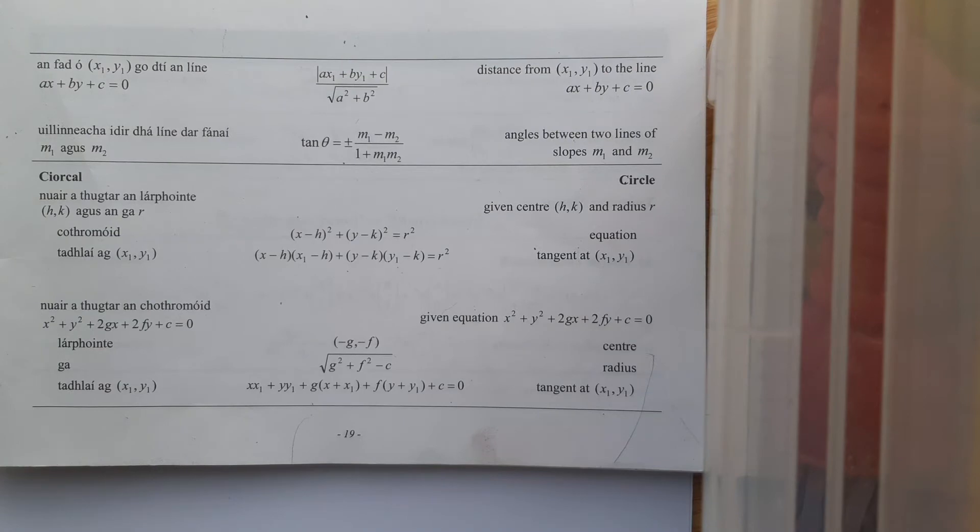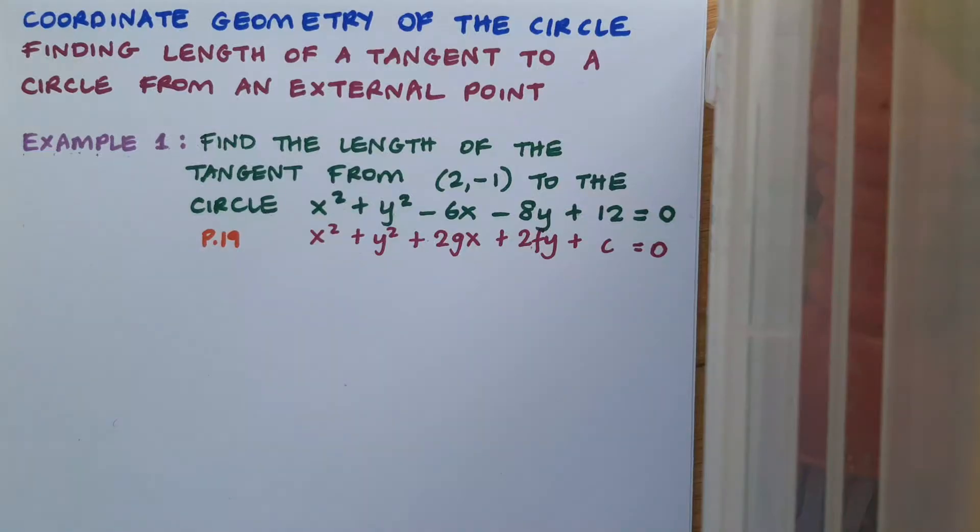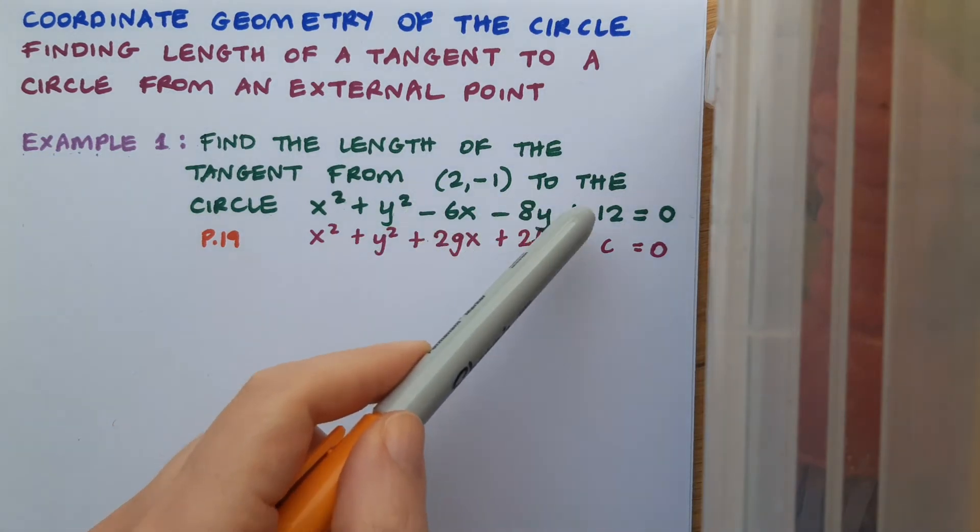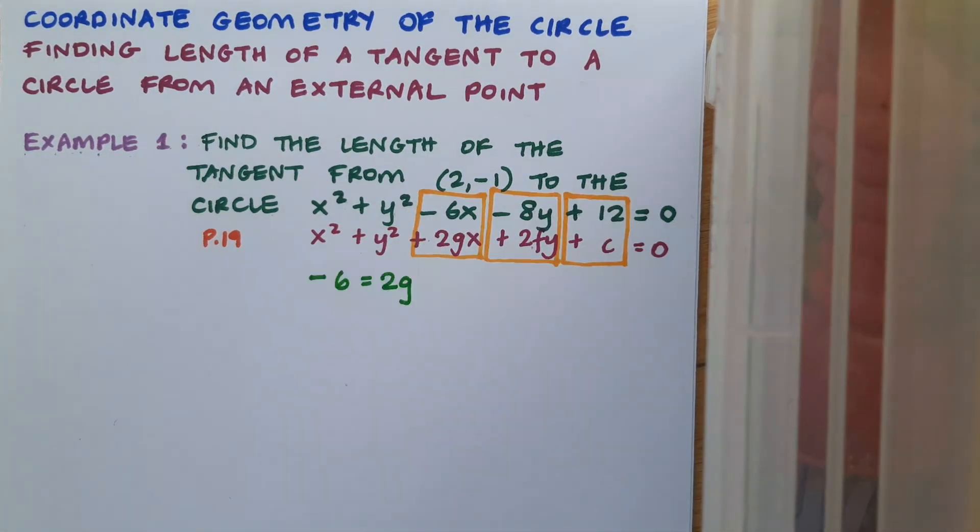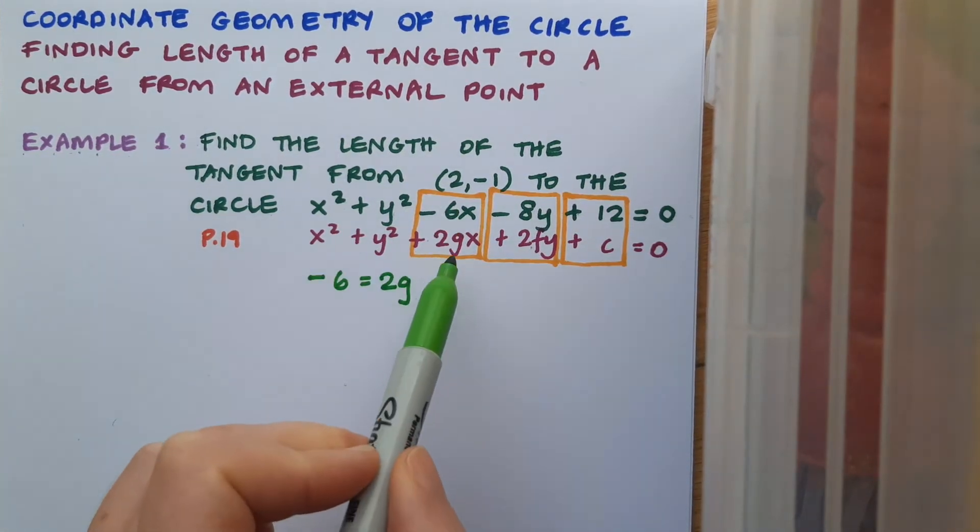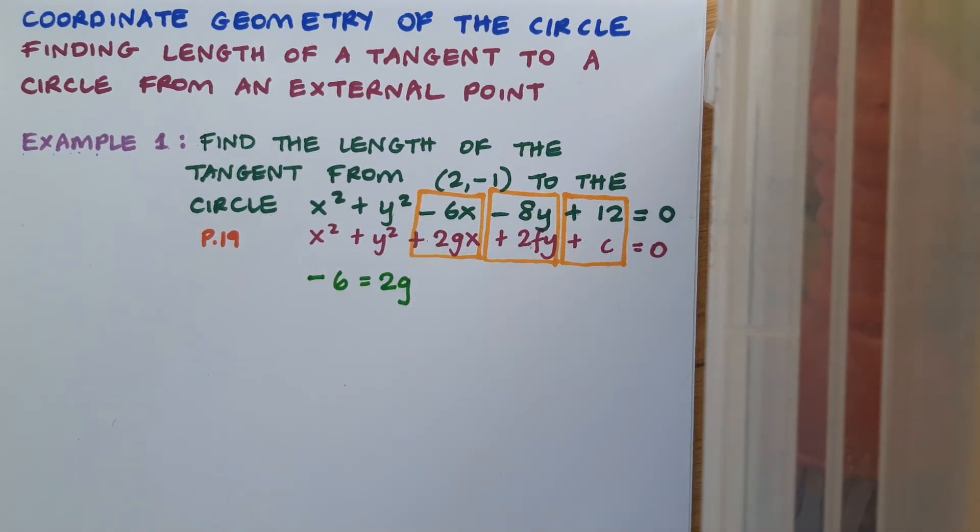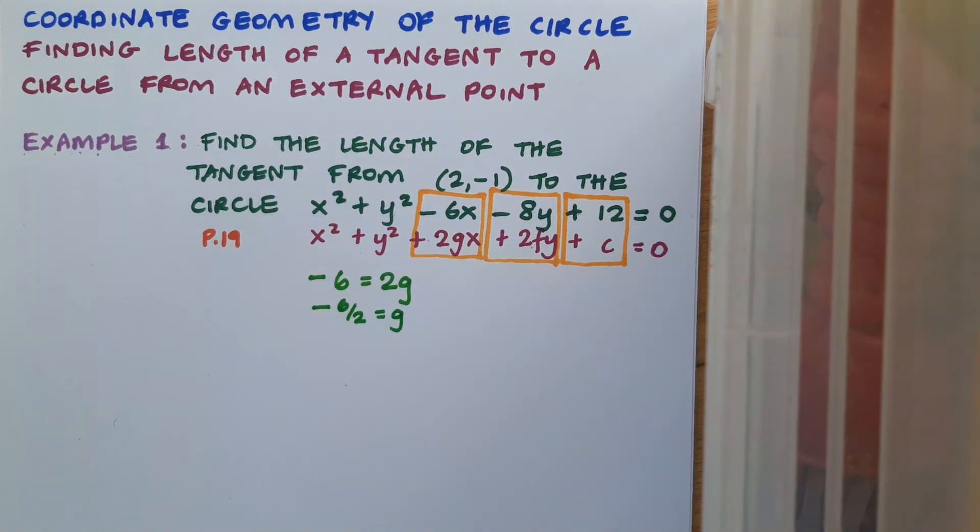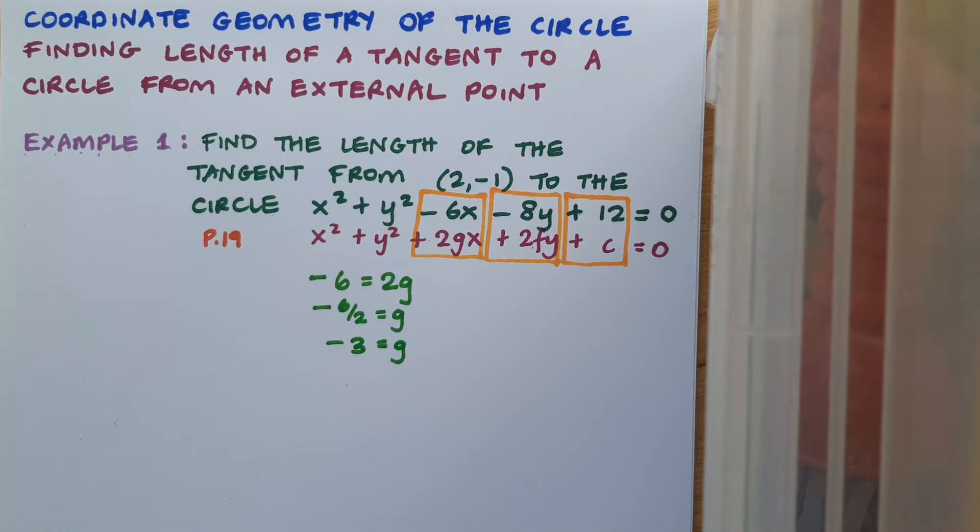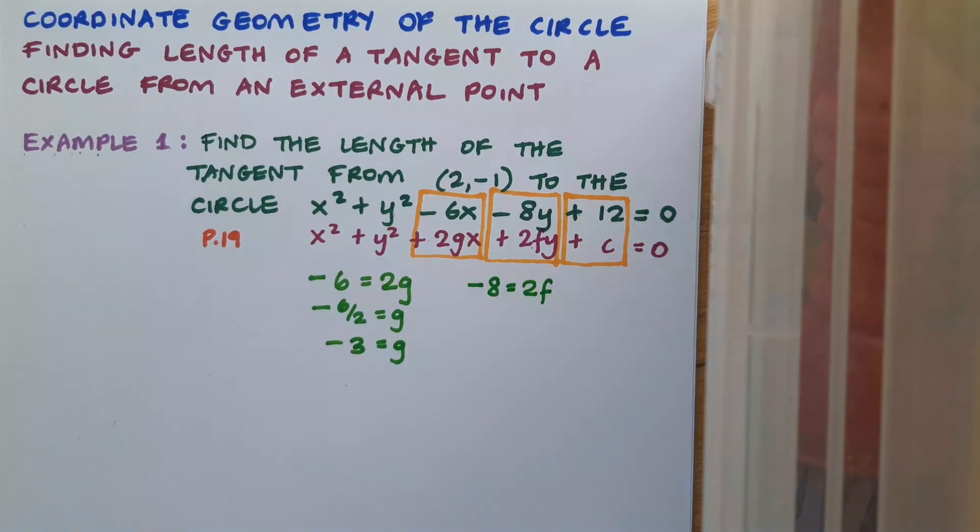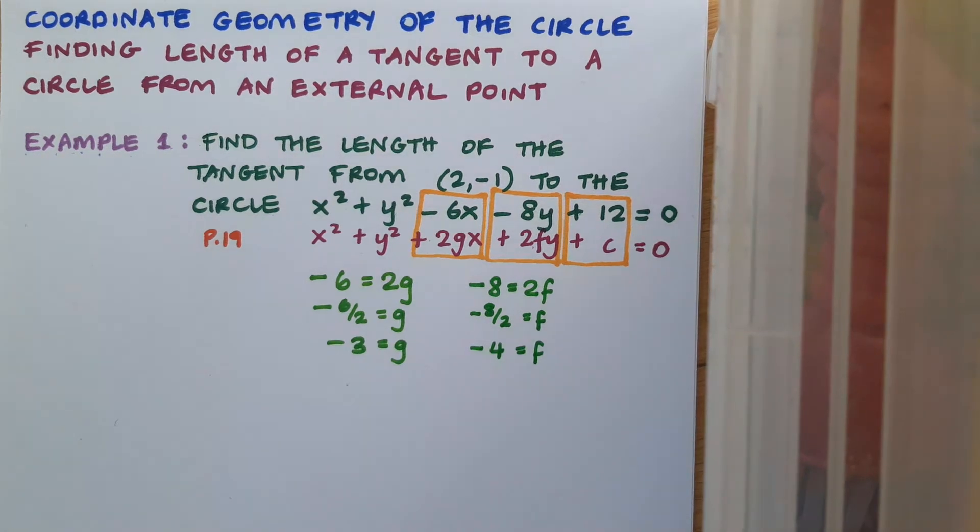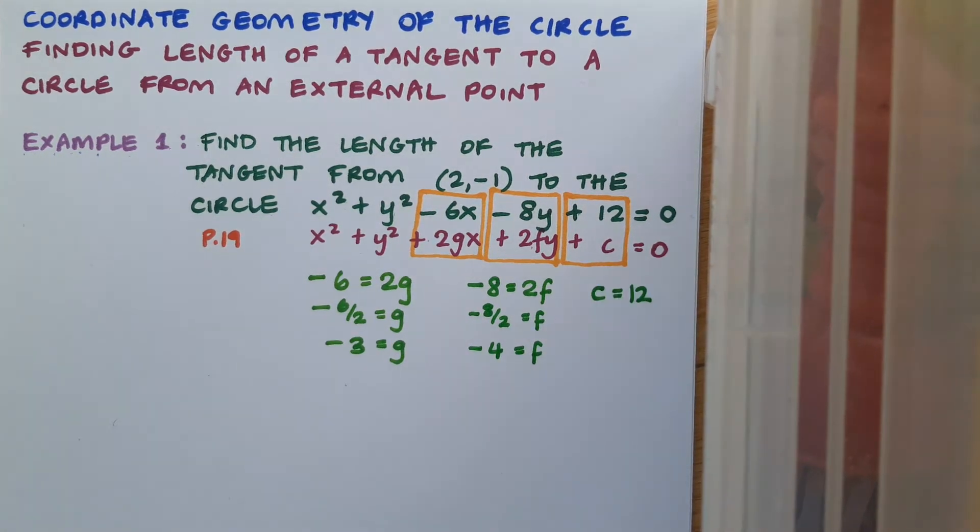To get those two things, I'll need to first of all find g, f and c. So I'll start by equating these terms. From the first equation, -6 = 2g, so g = -6/2 and g = -3. On to the y terms: -8 = 2f, so I'll divide by 2 and f = -4. And c is easy, it's just 12.